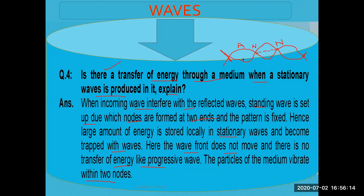Between two nodes, there is an anti-node. This is where the anti-node is formed, where the displacement of the particle is maximum. So here, the wave front does not move and there is no transfer of energy.